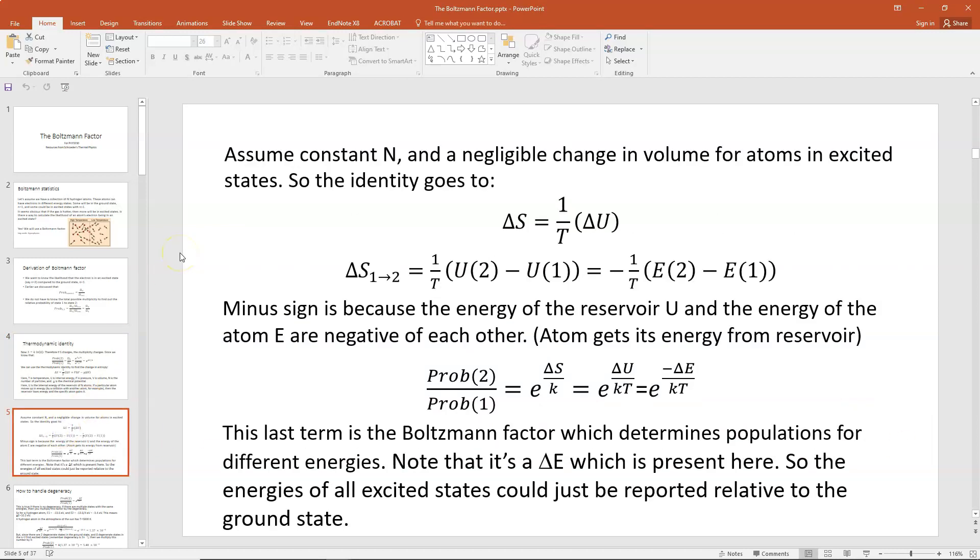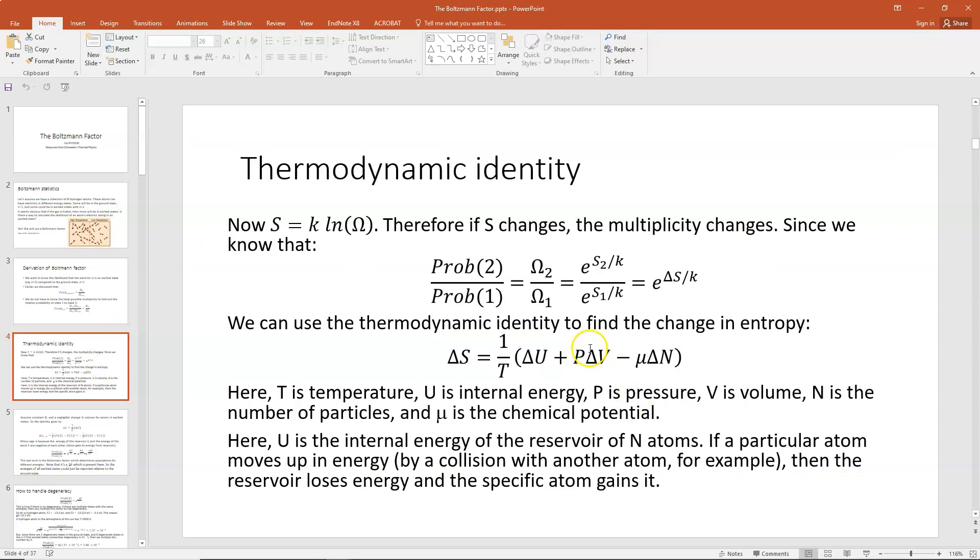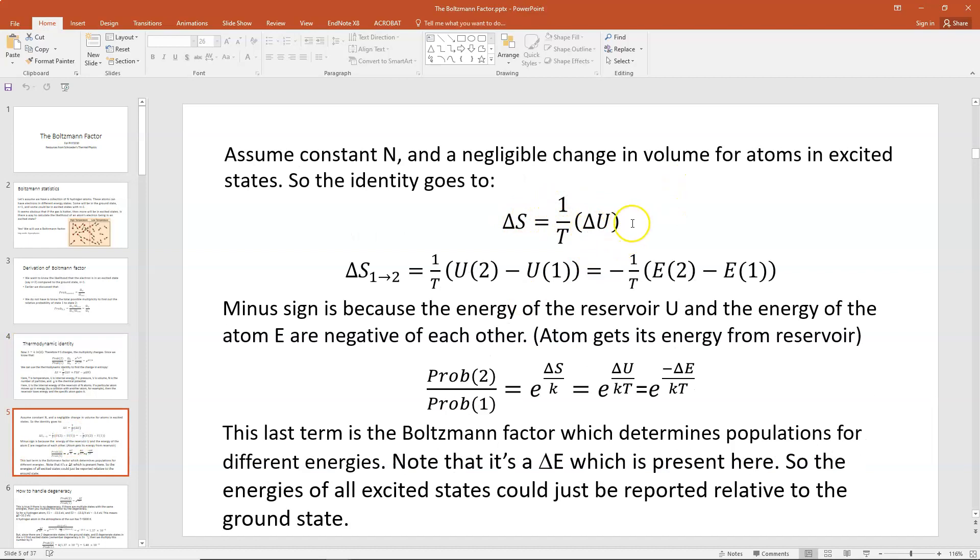Now, let's simplify our problem by assuming that we have a constant number of particles N and that the change in volume of an atom when it goes through an excited state change is negligible. We're talking very small numbers here, so we're going to ignore delta V. If N is fixed and delta V is teeny-weeny, then that means delta S would be equal to 1/T times delta U. This is from the thermodynamic identity. We're assuming delta V is negligible and delta N doesn't happen. There's no change in N.